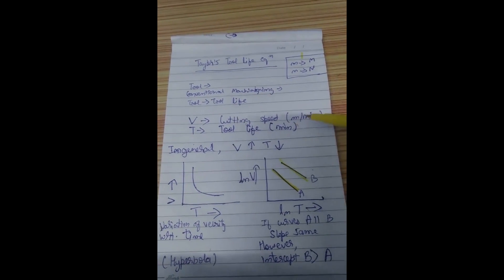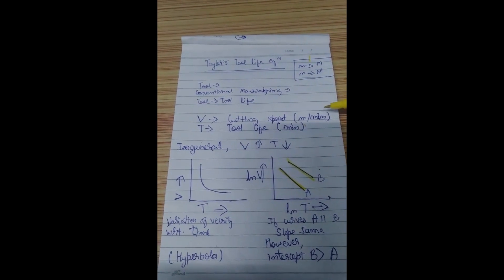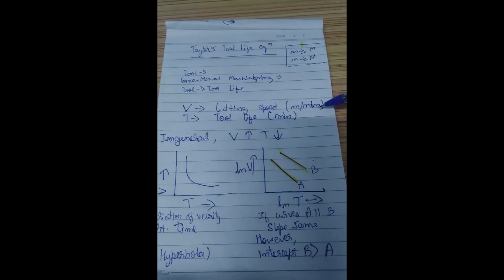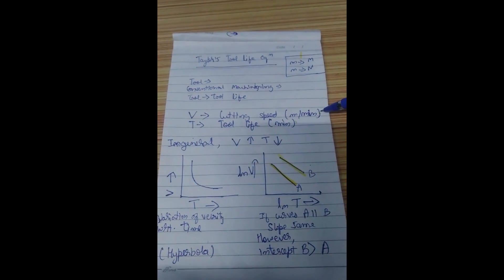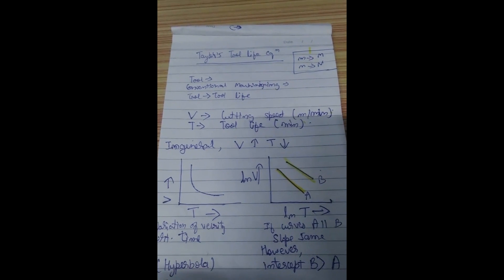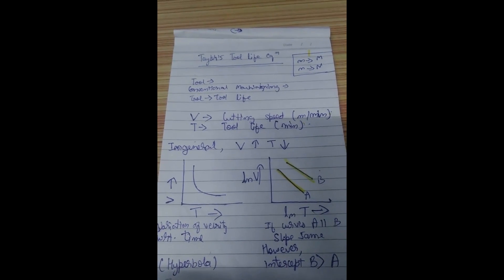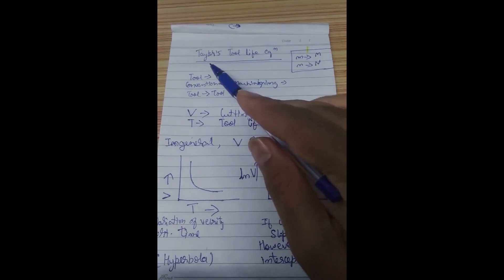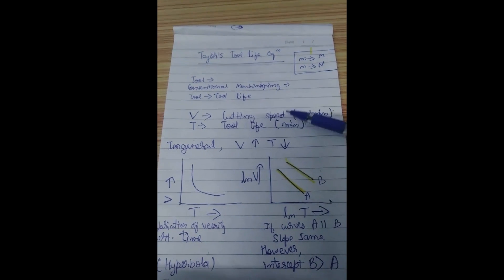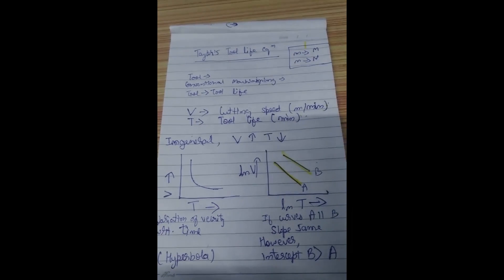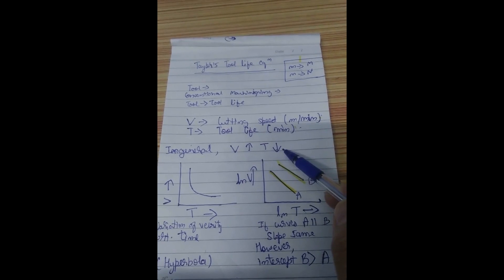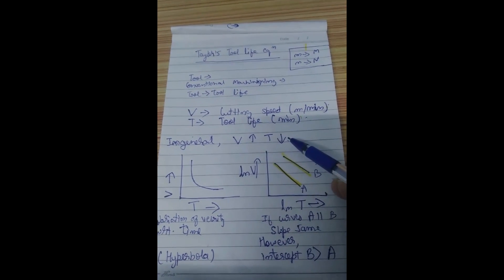So in general if we are having a particular cutting speed and a particular tool life, first of all let me clear that we are talking about only these two parameters. If we talk about more parameters then it will be modified Taylor's tool life equation. But in general right now we are talking only about cutting speed influence on the tool life. So in general we can say that if we increase the cutting speed the tool life will decrease, or if we decrease the cutting speed the tool life will increase.